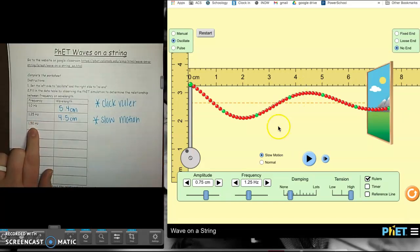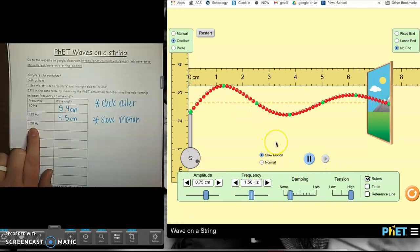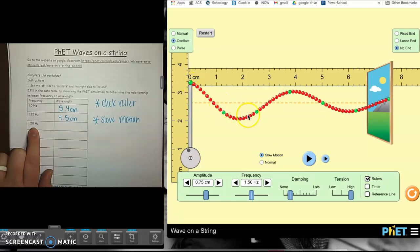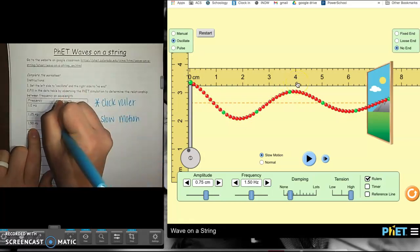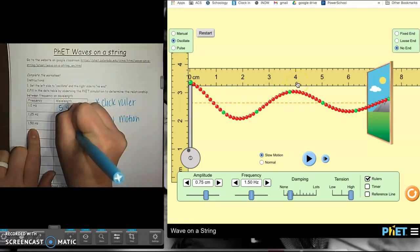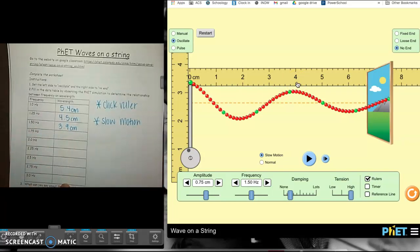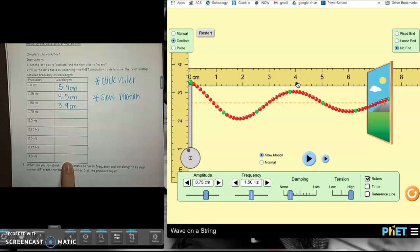We're going to do our next frequency, which is 5.1. So we're going to go up to 5.1. We're going to start it. We're going to let it oscillate for just a second, and then we're going to pause it. And we're going to say our new crest to crest. So our new wavelength is around 3.9. So you're going to keep doing this for all of the different frequencies until you get to the very end.